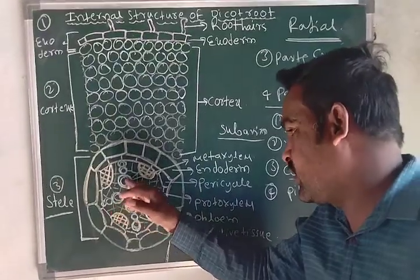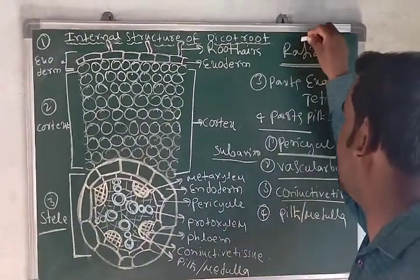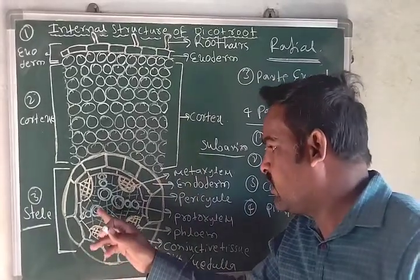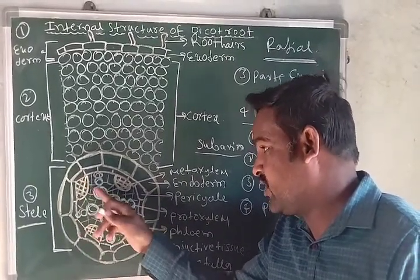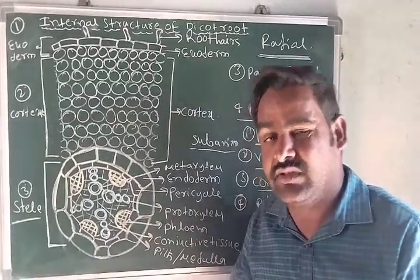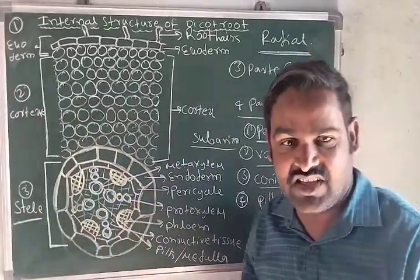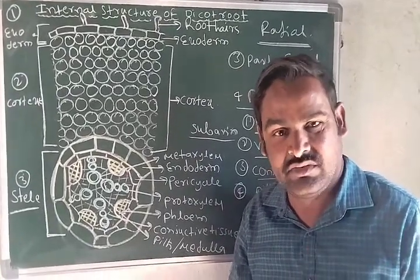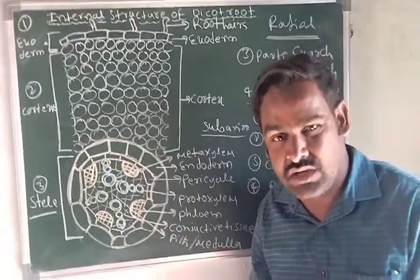The vascular bundle is the second part of the stele. The radial type of vascular bundle is present because the xylem and phloem are arranged in different rows in an alternate manner. This type of vascular bundle is called the radial type, and this is a characteristic feature of roots, whether dicot or monocot roots.